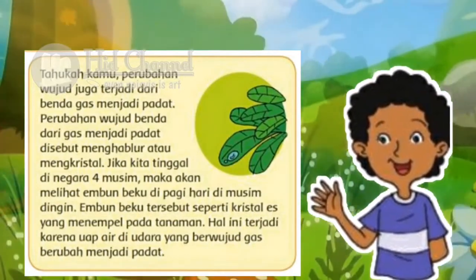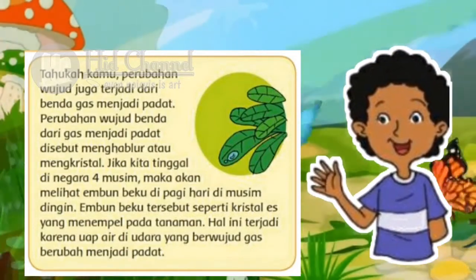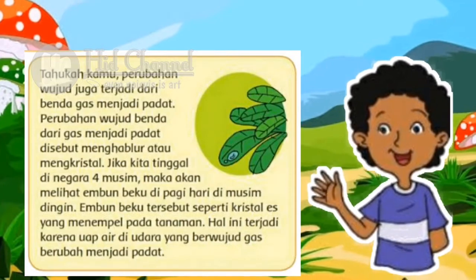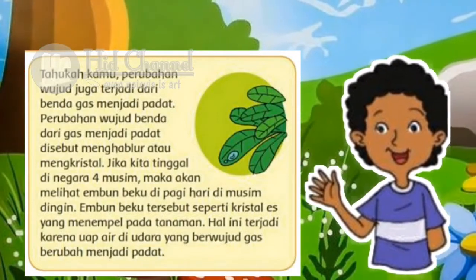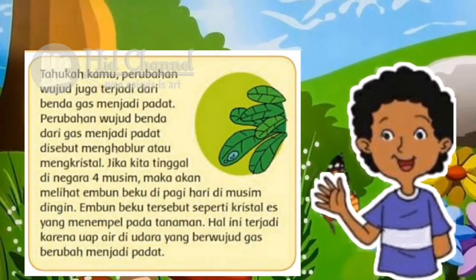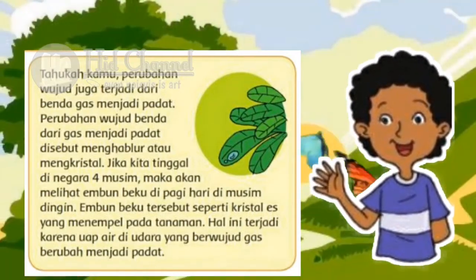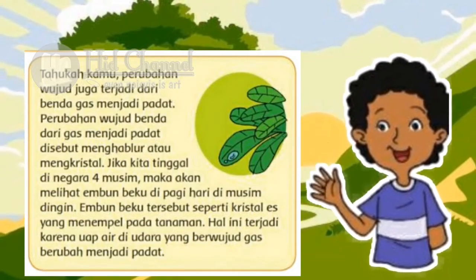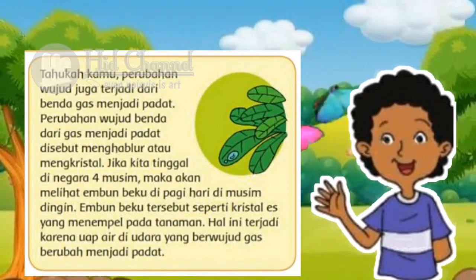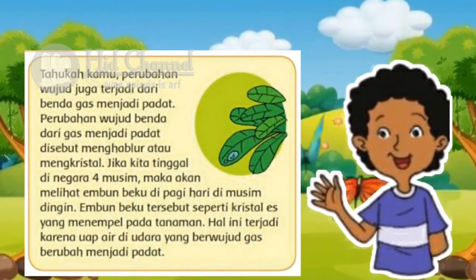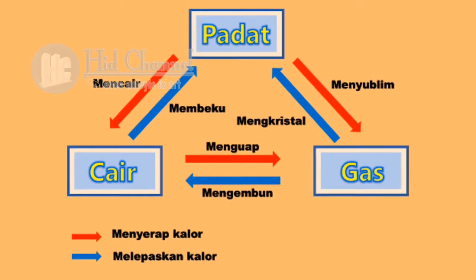Tahukah kamu, perubahan wujud juga terjadi dari benda gas menjadi padat. Perubahan wujud dari gas menjadi padat disebut menghablur atau mengkristal. Jika kita tinggal di negara 4 musim, maka akan melihat embun beku di pagi hari di musim dingin. Embun beku tersebut seperti kristal es yang menempel pada tanaman. Hal ini terjadi karena uap air di udara yang berwujud gas berubah menjadi padat. Perhatikan skema perubahan wujud benda berikut.